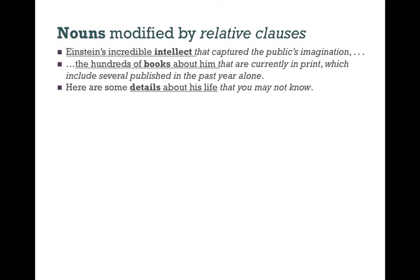In another sentence we see: here are some details about his life that you may not know. Details is our noun. Some details — some is an adjective modifying the word details. Details about his life is a prepositional phrase that modifies details. The relative clause that you may not know modifies details about his life. Here you is our subject, may not know is our verb. The object of know is the relative pronoun that, which refers back to some details about his life.